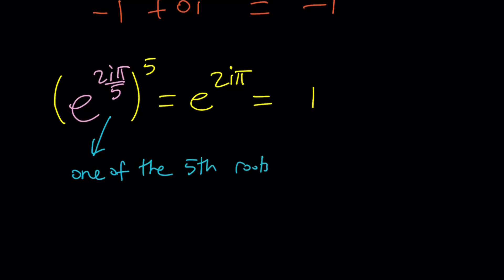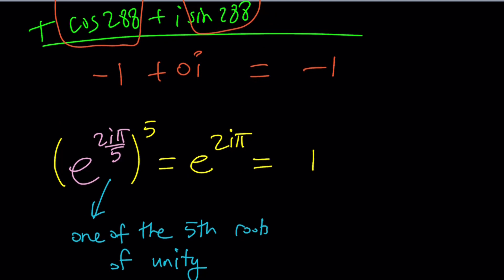So what does that mean? The number inside the parentheses when raised to the 5th power gives us 1. So it must be, be careful about that, one of the 5th roots of 1, one of the 5th roots of 1. Instead of 1, we usually say unity. So if you want, you can replace the 1 with unity, which means 1, basically. So how many 5th roots does unity have? 5. What are they?